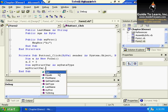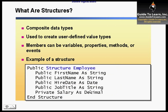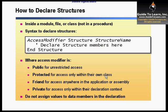You can declare the structure inside of a module, file, or a class — not in a procedure. The syntax is: provide the access modifier like public, private, or friend; use the structure keyword; specify a name; and at least declare one structure member inside the block. The available access modifiers are public, protected, friend, and private.